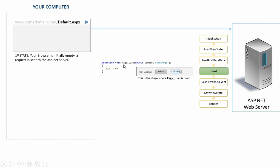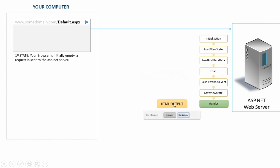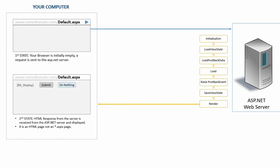Next, in the load stage, the page load method is going to be executed. Since we have no code in page load, nothing will happen. The raise postback event stage would also take place only if it is a postback request. The server will also skip the save view state event, which I will explain later. And in the last stage, the ASP.NET web form will be rendered as an HTML output. So at the end, our web server doesn't send any ASP.NET web form. Instead, it renders the ASP.NET web form as an HTML output and sends it to the client, because the browser can only understand HTML formatted output.